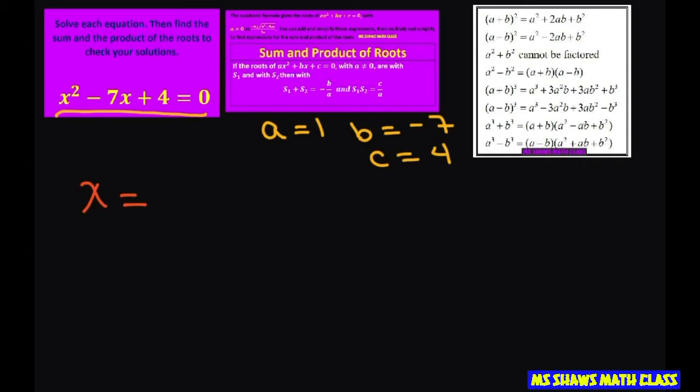so opposite of -7 is positive 7, plus or minus square root of b² - 4ac. This is going to be divided by 2, which is 2 times 1. This gives you 7 plus or